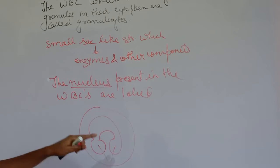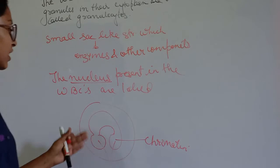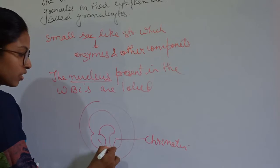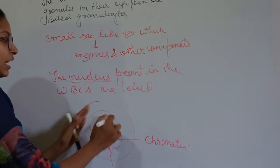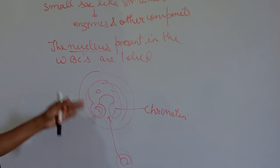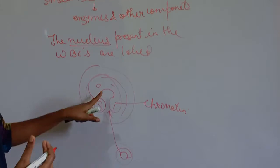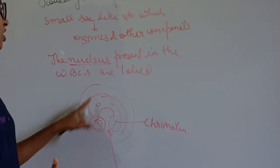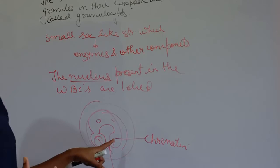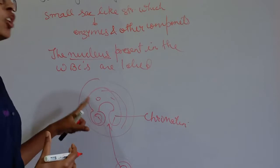The nucleus is lobed because it contains chromatin — the genetic material. When the cell moves to engulf a germ, the lobed structure ensures the chromatin material does not scatter. The cell shows mobility to engulf pathogens, but the chromatin remains within the lobes and does not separate.